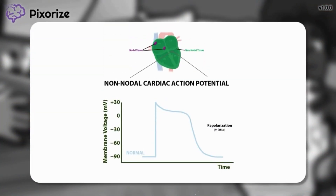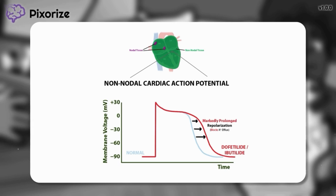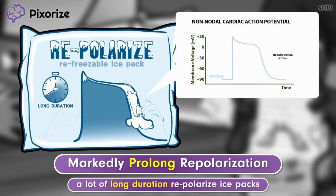Returning to our graph of the cardiac action potential, here's the curve after taking Dofetilide or Ibutilide. These drugs markedly prolong repolarization by blocking potassium channels, pushing the fall in voltage to the right and effectively slowing down the resetting of the cell. The snow the polar bear slides on makes the right side of the mountain look thicker — helping you visualize what prolonged repolarization looks like on the cardiac action potential.